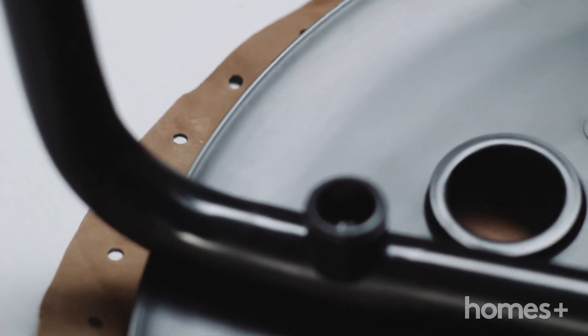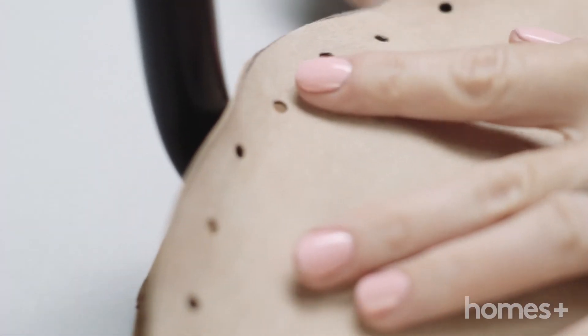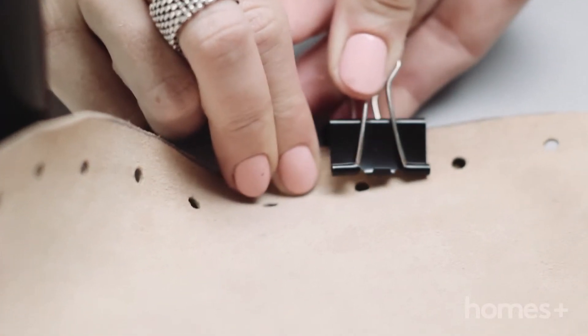Step 5: Sandwich the seat of your stool between the circles and line up the holes that correspond. Make sure all of the legs end up between the stitching holes. Then clip the edges to hold them into place.